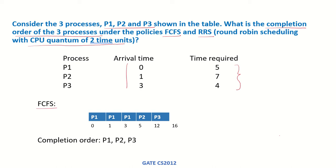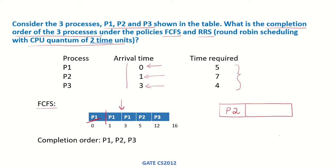Starting with first come first serve: at time 0, only P1 is in the system so it is scheduled. At time 1, P2 arrives but since FCFS has no preemption, P1 continues running and P2 is placed in the ready queue. At time 3, P3 arrives and is also placed in the ready queue. P1 requires 5 time units total, so it finishes at time 5 and exits the system.